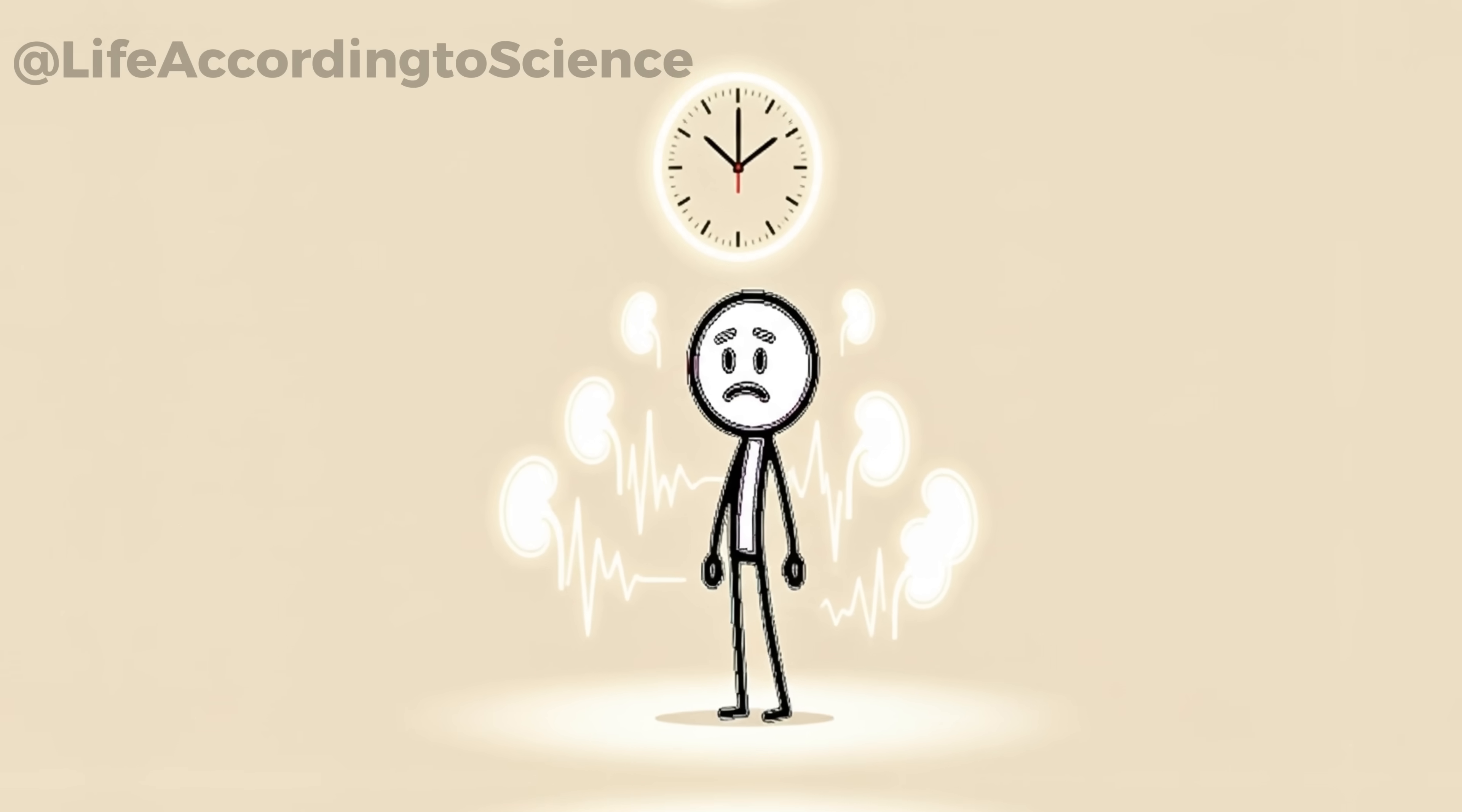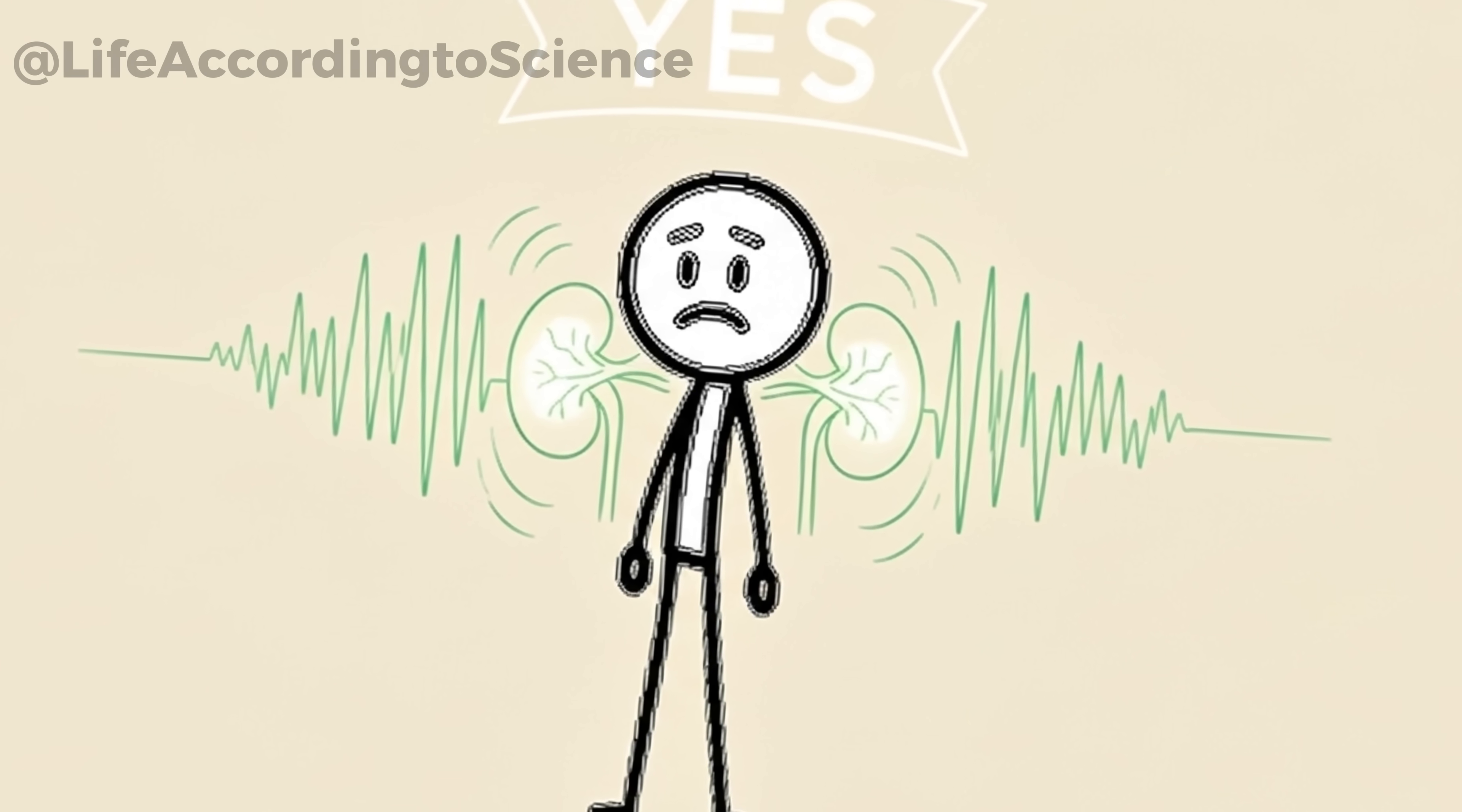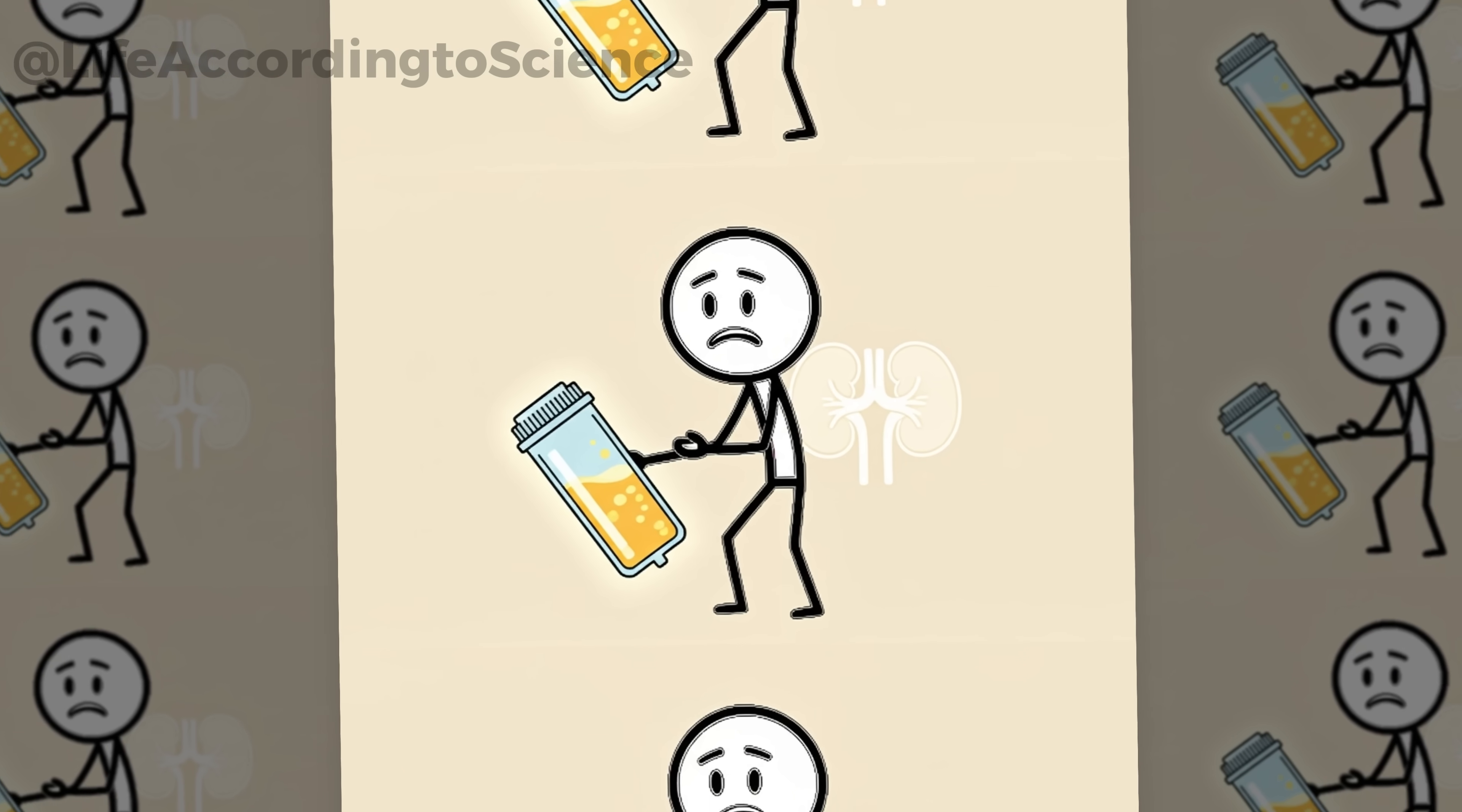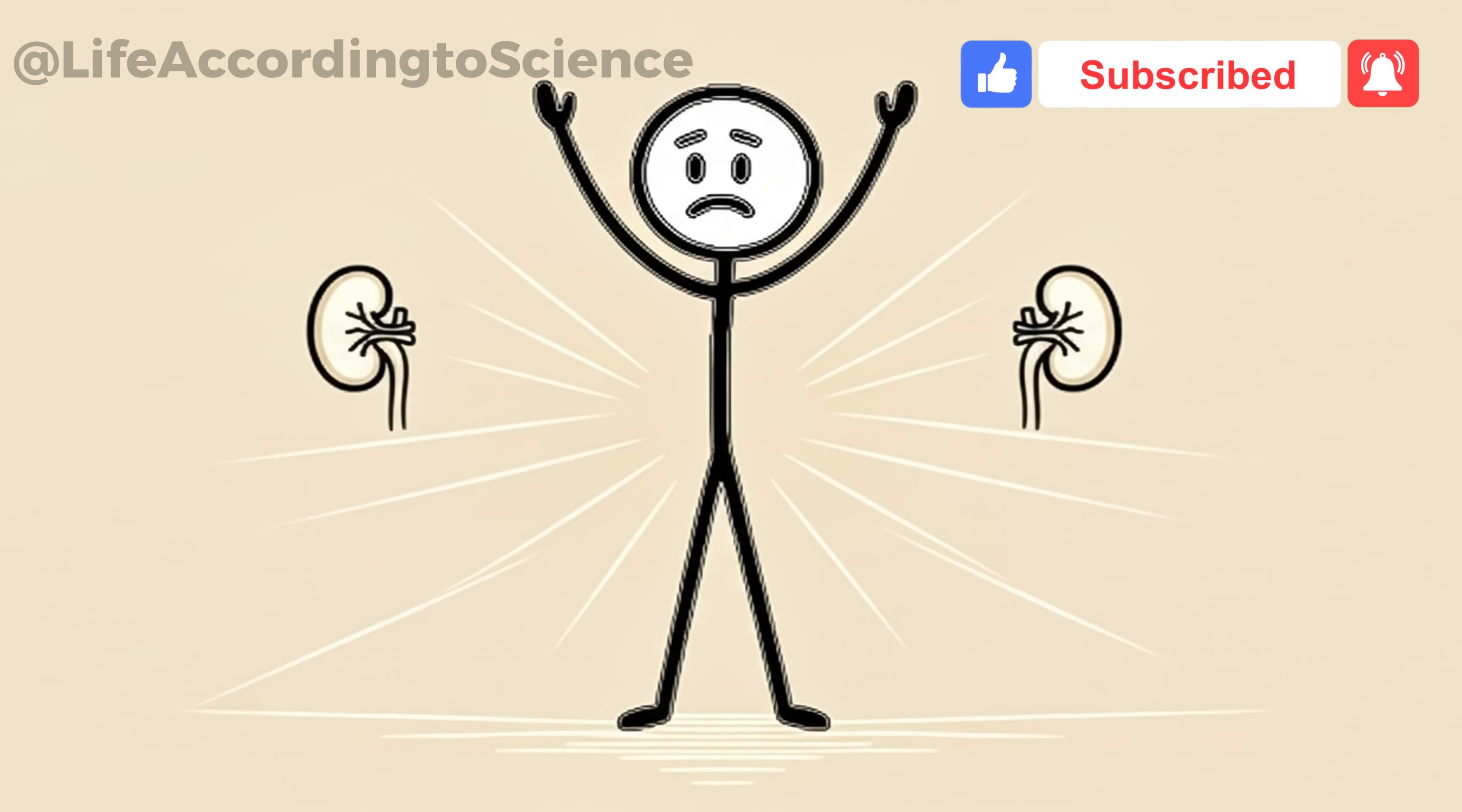You might wonder, can just 30 days really matter? The answer is a resounding yes. While chronic damage takes years to build, improvements in kidney stress markers can begin in just weeks. Blood pressure decreases, protein leakage lessens, and overall filtration efficiency improves. Your urine itself may even change subtly, sometimes becoming clearer, indicating reduced waste overload. These small but meaningful signs show that the kidneys are stabilizing.